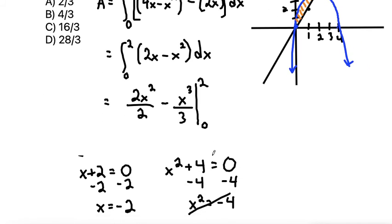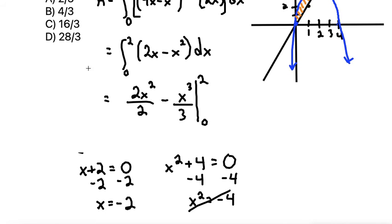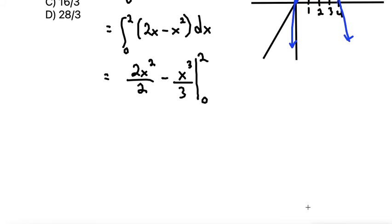Okay, from here, oops, I left this from a previous problem, sorry, just ignore that. And from here, let's simplify. 2 divided by 2 will cancel, so that leaves us with x² - x³/3 evaluated from 0 to 2.